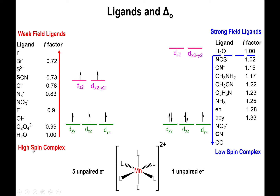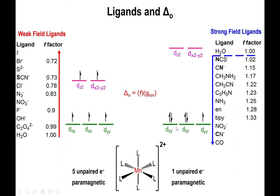When you have weak field ligands and more unpaired electrons, the complex is called high spin. When you have the fewest unpaired electrons with strong field ligands, it's called low spin. Both can be paramagnetic. As a rough reference: if delta octahedral is above 13,000 inverse centimeters, you can consider the complex low spin (strong field); if it's below 13,000, you're likely dealing with a high spin (weak field) complex.